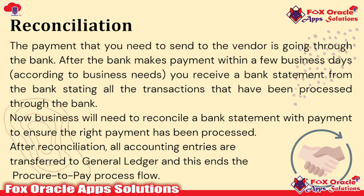The last step is reconciliation. Reconciliation means that we have to pay a certain amount to the supplier — we send a document to the bank so they can make the payment to the supplier. Once the payment is completed by the bank, they send the document back to us, and in reconciliation we check and match that whatever payment they have done is correct. You receive a bank statement from the bank stating all transactions processed. Businesses need to reconcile the bank statement with payments to ensure the right payment has been processed. After reconciliation, all accounting entries are transferred to GL.